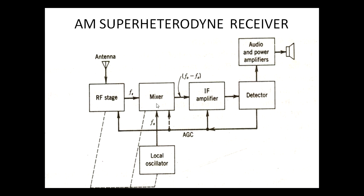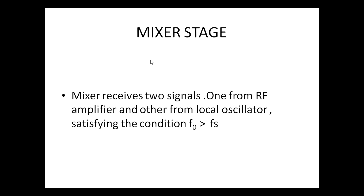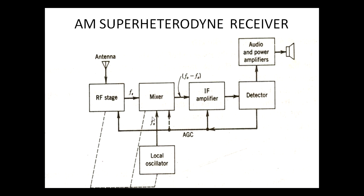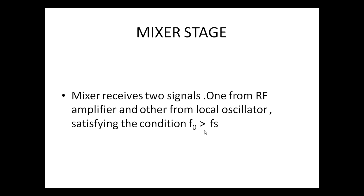The next stage of our receiver is the mixer stage. The mixer stage receives two signals: one from the output of the RF amplifier, and the other from the local oscillator. The condition is that the local oscillator signal F0 should always be greater than FS.